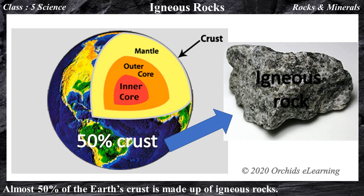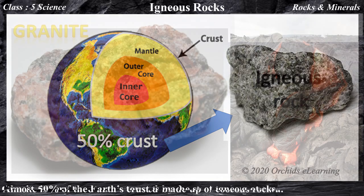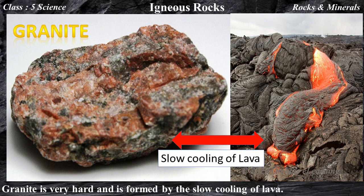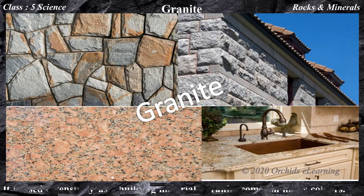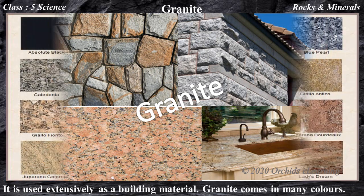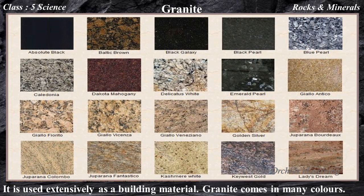Let us see the examples of igneous rocks. Granite — it is very hard and is formed by the slow cooling of lava. It is used extensively as a building material, as polished granite on kitchen counters and floors. Granite comes in many colors and patterns.